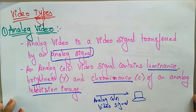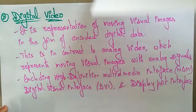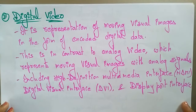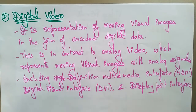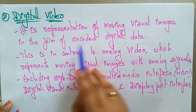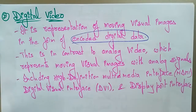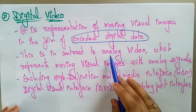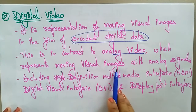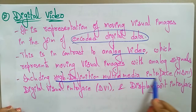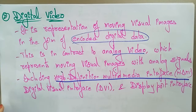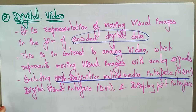Coming to the next video type — digital video. Nowadays whatever we are seeing on TVs and screens, everything is digital video. It is a representation of moving visual images in the form of encoded digital data. This is in contrast to analog video, which represents moving visual images with analog signals. Digital video includes the high definition multimedia interface, that is HDMI. By using HDMI you are able to see high definition — that is how HD TV works.